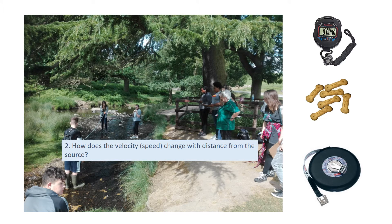To measure the velocity of the river, we first used a tape measure to measure 10 meters downstream, then we used a dog biscuit as an object that floats and is biodegradable, and a stopwatch to time how long it would take the dog biscuit to travel 10 meters. From that we could calculate the velocity. To increase reliability we repeated our measurements at each site three times.